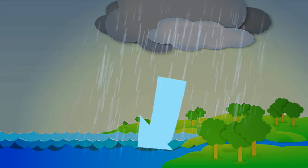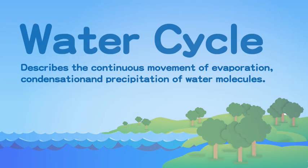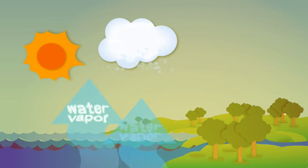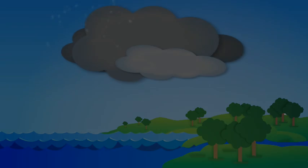Water is transferred back to the ocean. The whole process is called the water cycle, and clouds will be formed through this cycle again and again.